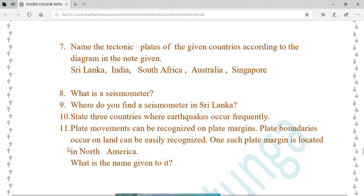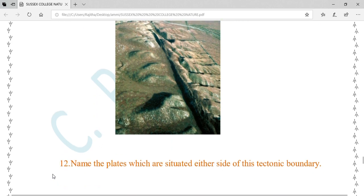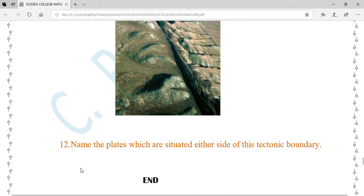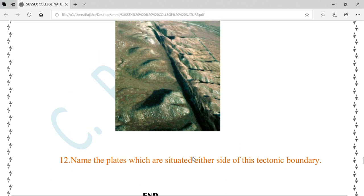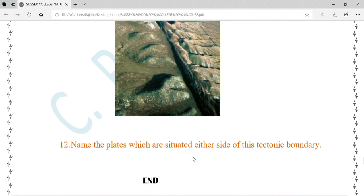Number eleven: Plate movements can be recognized on plate margins. Plate boundaries occur on land can be easily recognized. One such plate margin is located in North America. What is the name given to it? Number twelve: Name the plates which are situated either side of this tectonic boundary. Thank you.